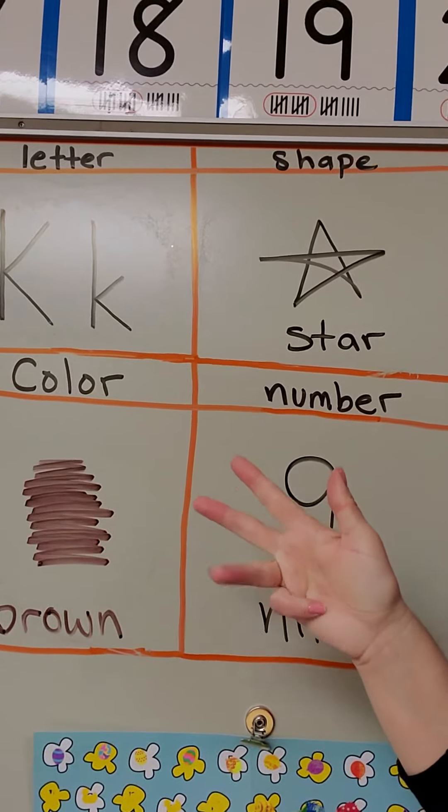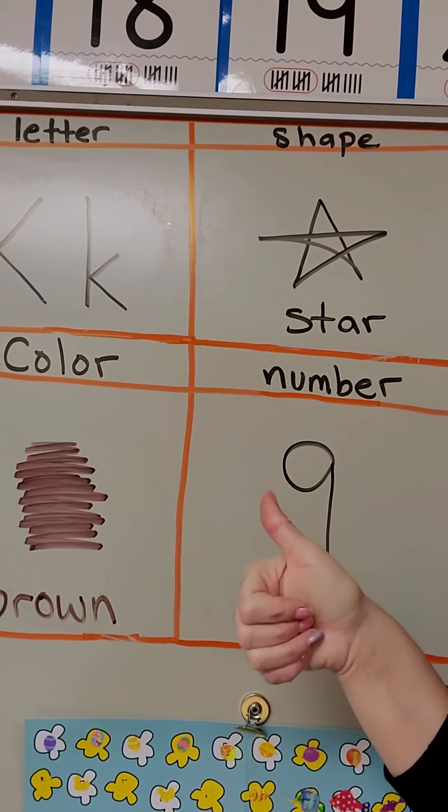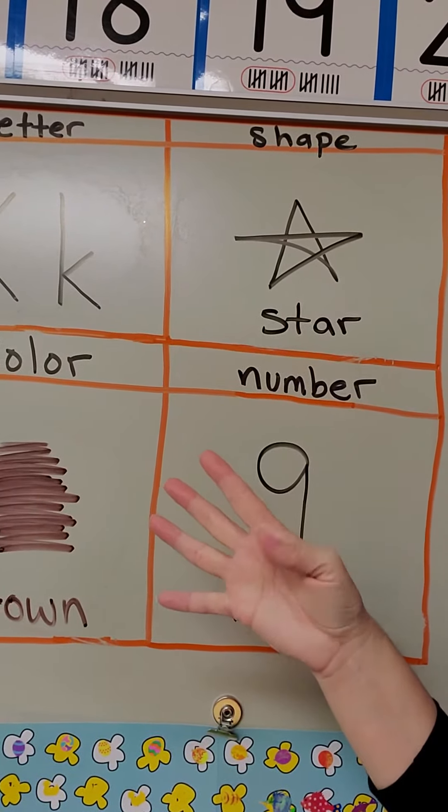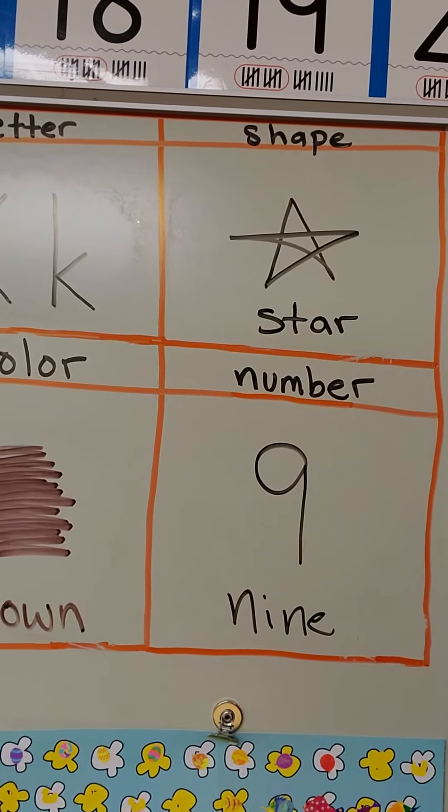1, 2, 3, 4, 5, 6, 7, 8, 9. Five fingers on one hand and four on the other make 9.